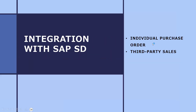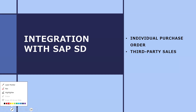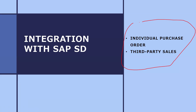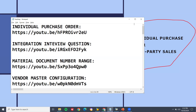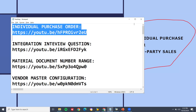The first question they asked is integration with SAP SD. There are two business processes where it has got integrated. One is individual purchase order and the other is third party. You have to say both these business processes. I have put a link in the description — check the link for the individual purchase order.